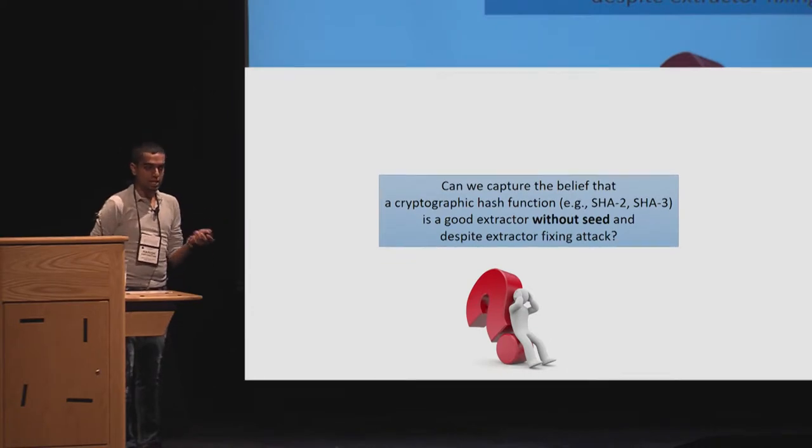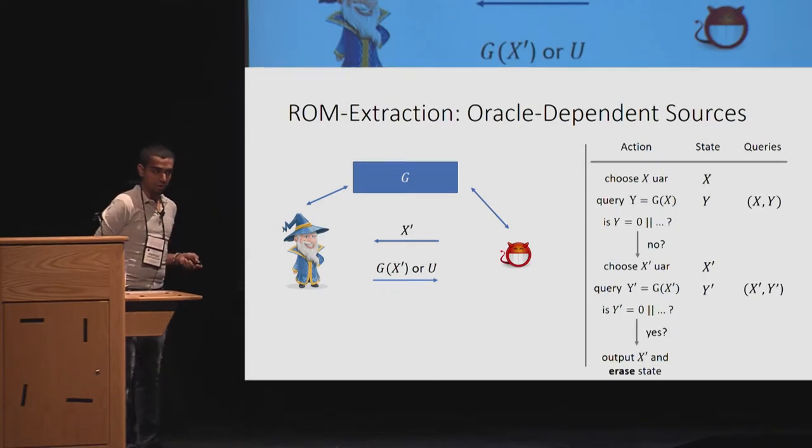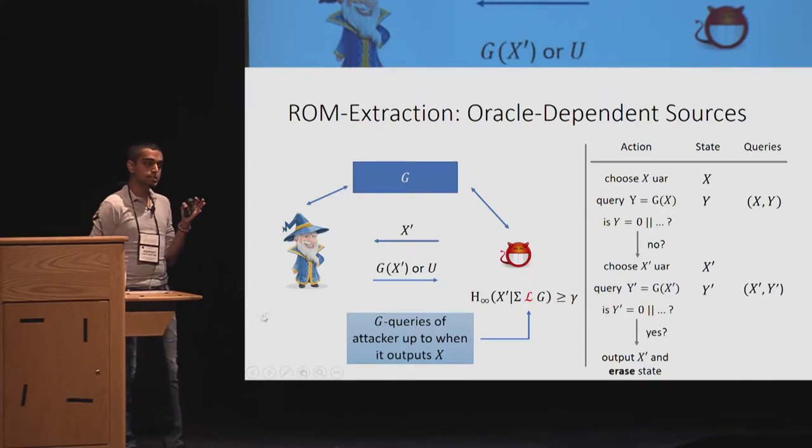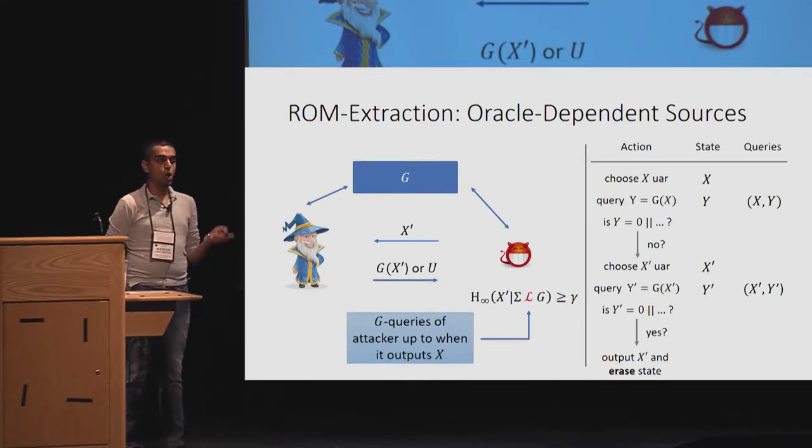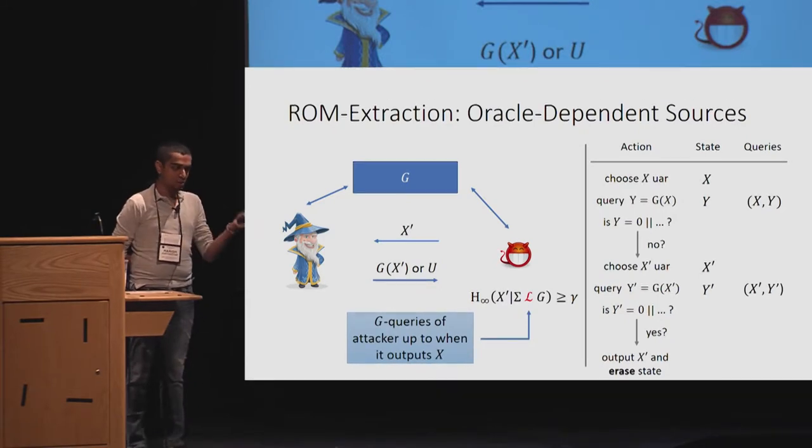Let's focus on the queries that the adversary makes. It makes the following set of queries. Now, let's look at conditioning on X prime with the set of queries L. If you have not woken up from the coffee, this is the biggest takeaway. We condition on the set of queries L in addition to sigma. And once we condition L, we can actually lose G. So L is a random variable denoting the set of G queries up to when it outputs X.